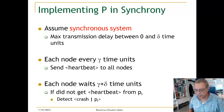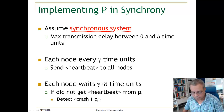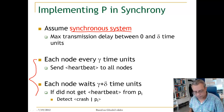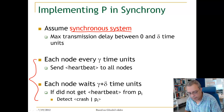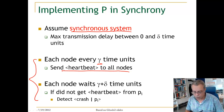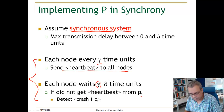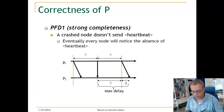Let's look at the implementation of P in a synchronous system. We assume a synchronous system with max transmission time between zero and delta time units. The algorithm works as follows: each node, every gamma time units, sends a heartbeat to all nodes. A node waits gamma plus delta time units — the duration plus the max transmission time — and if it did not receive a heartbeat from process PI, it declares that PI has crashed.